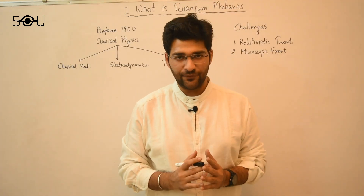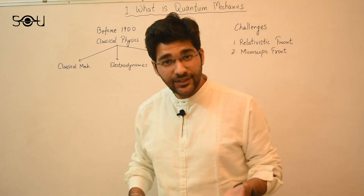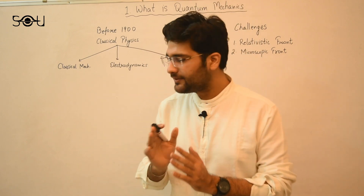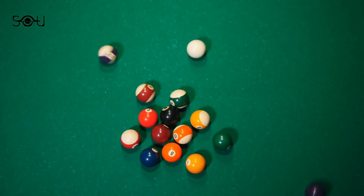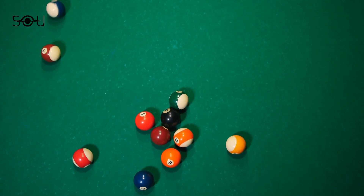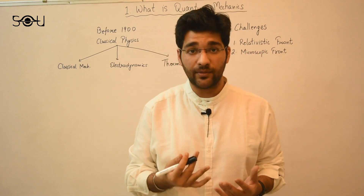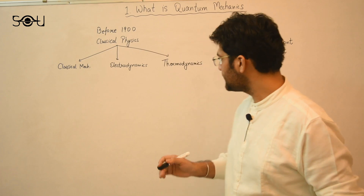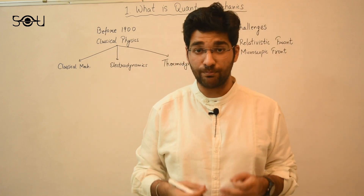Let me give you a brief overview of how quantum mechanics was born. Before the year 1900 — at the end of the 19th century — physics comprised three major fields: classical mechanics to explain the motion of objects, based on Newton's laws; electrodynamics, which described radiation using four Maxwell's equations relating electricity and magnetism; and thermodynamics, which described the flow of heat. Using these three fields we could explain almost everything around us, and mankind thought they had pretty much figured out everything.